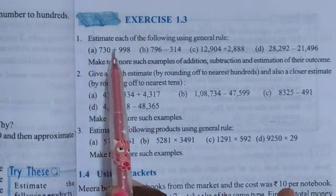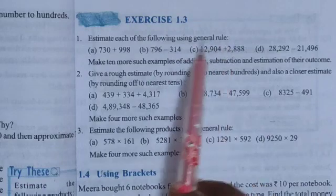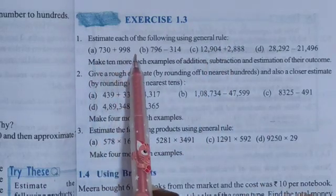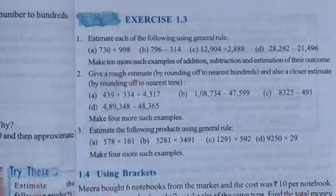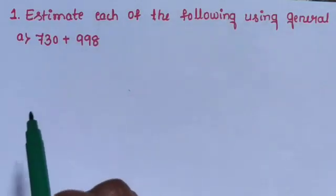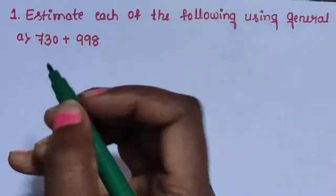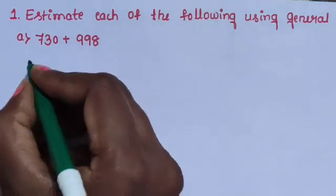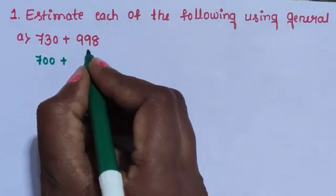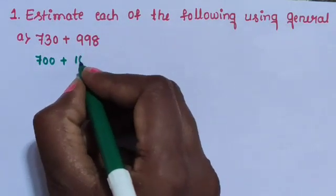Question number 1. Estimate each of the following using the general rule. Sub-question A: 730 plus 998. First, estimate these two numbers by rounding to the hundreds place. 730 rounds to 700, and 998 rounds to 1000.